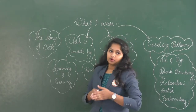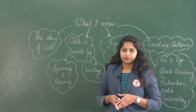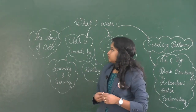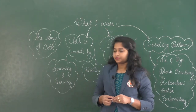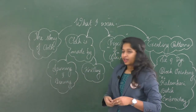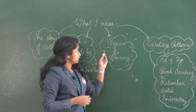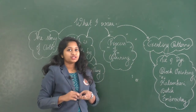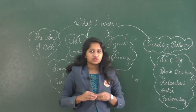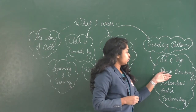You can see the mind map of the video 'What I Wear' here. Under this we would learn the story of cloth, and how clothes are made by spinning, weaving, and knitting. We would also learn the process of coloring and about creating patterns — including tie and dye, block printing, kalamkari, batik, and embroidery.